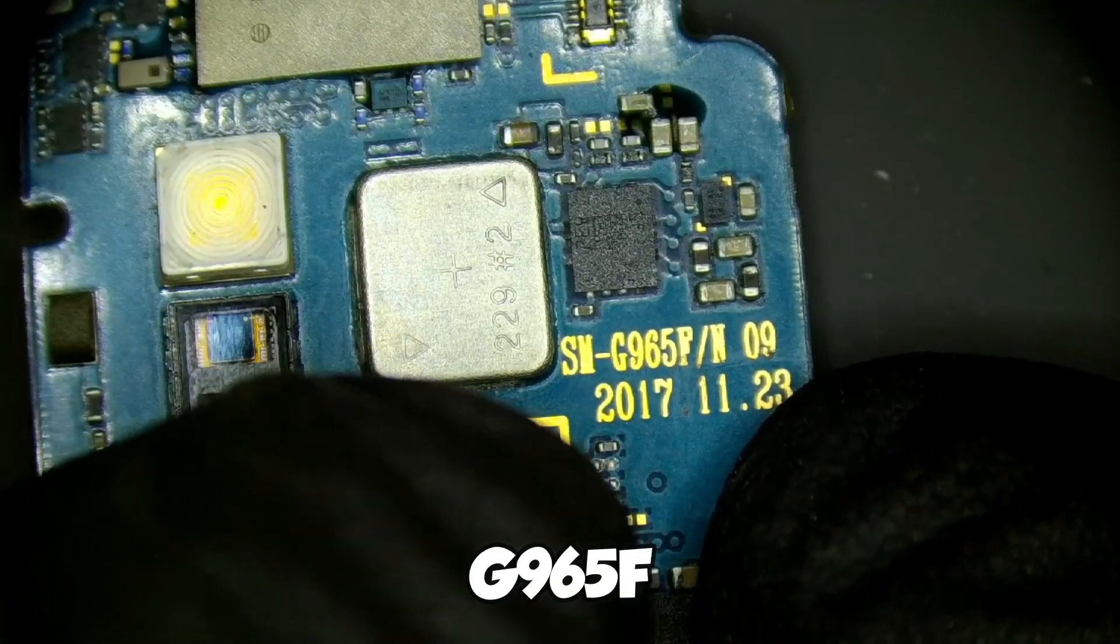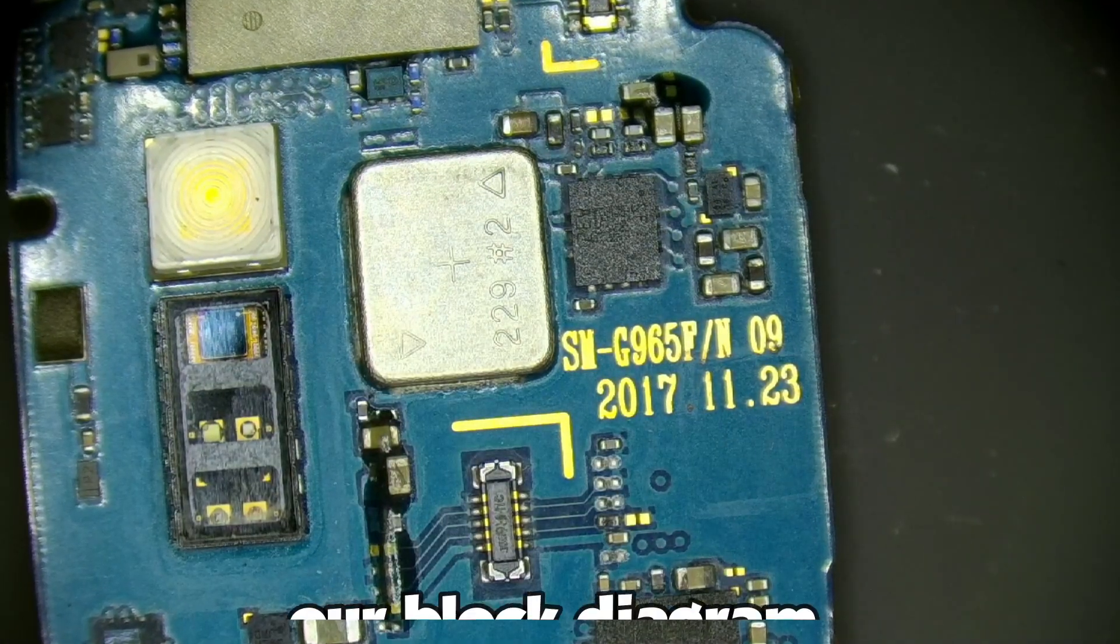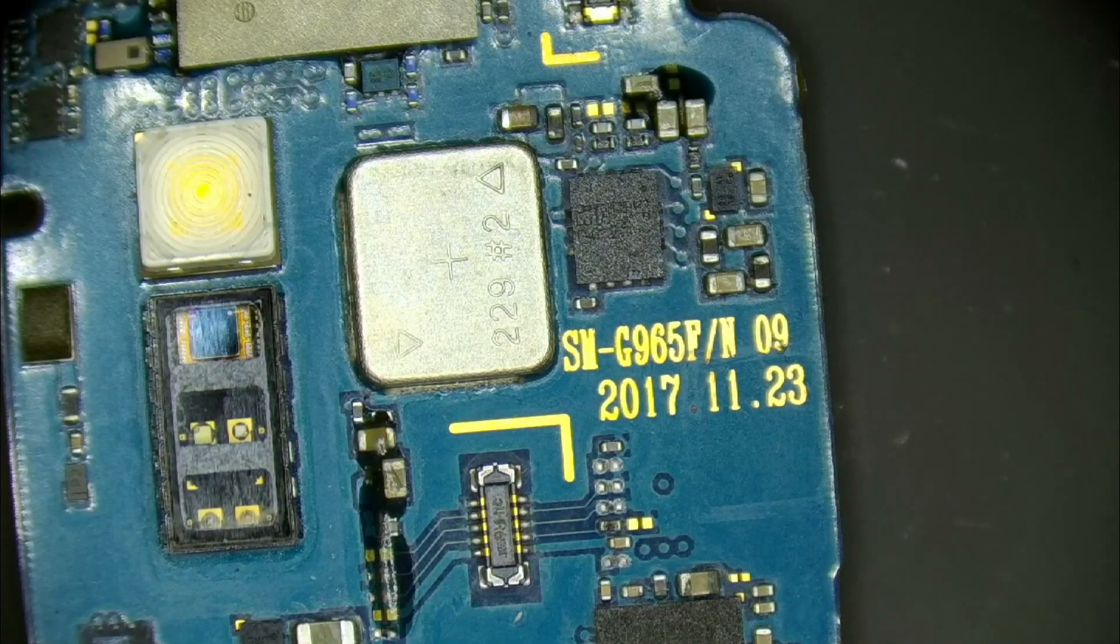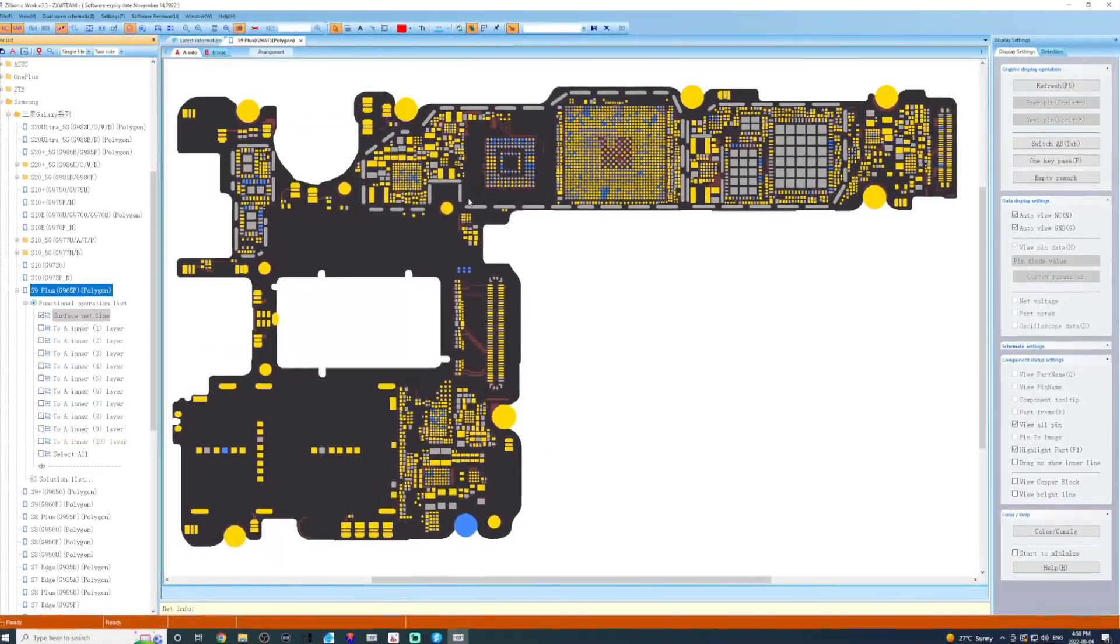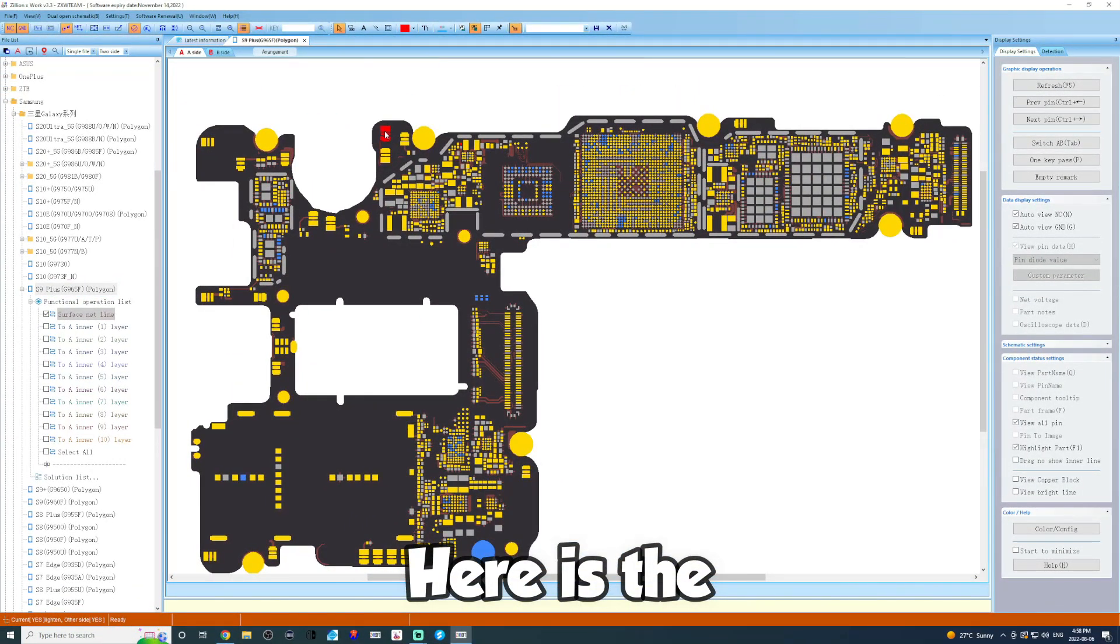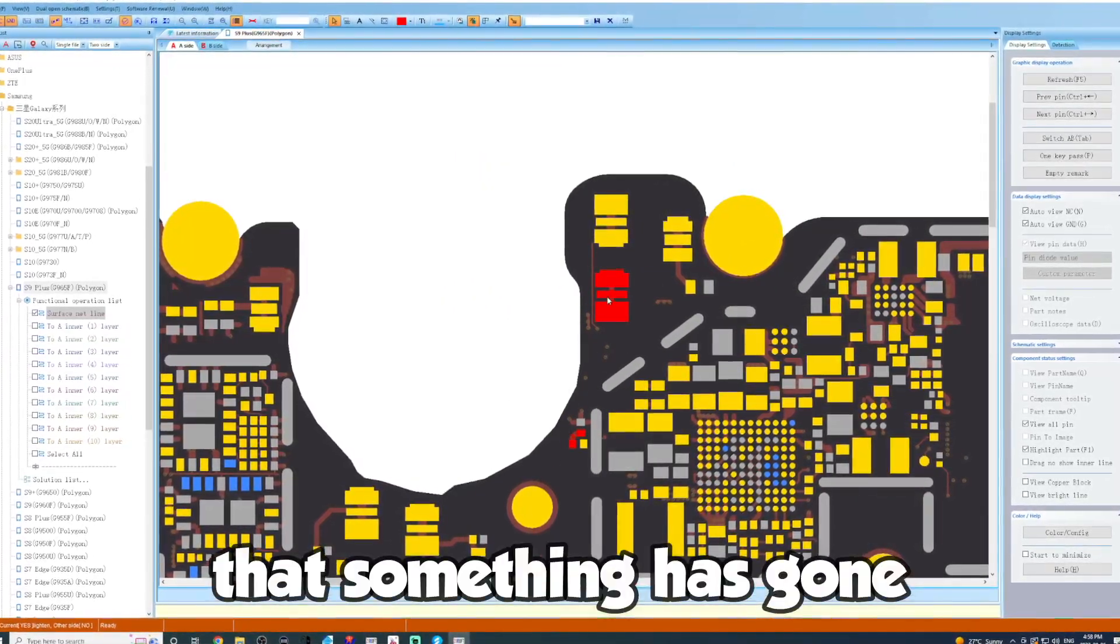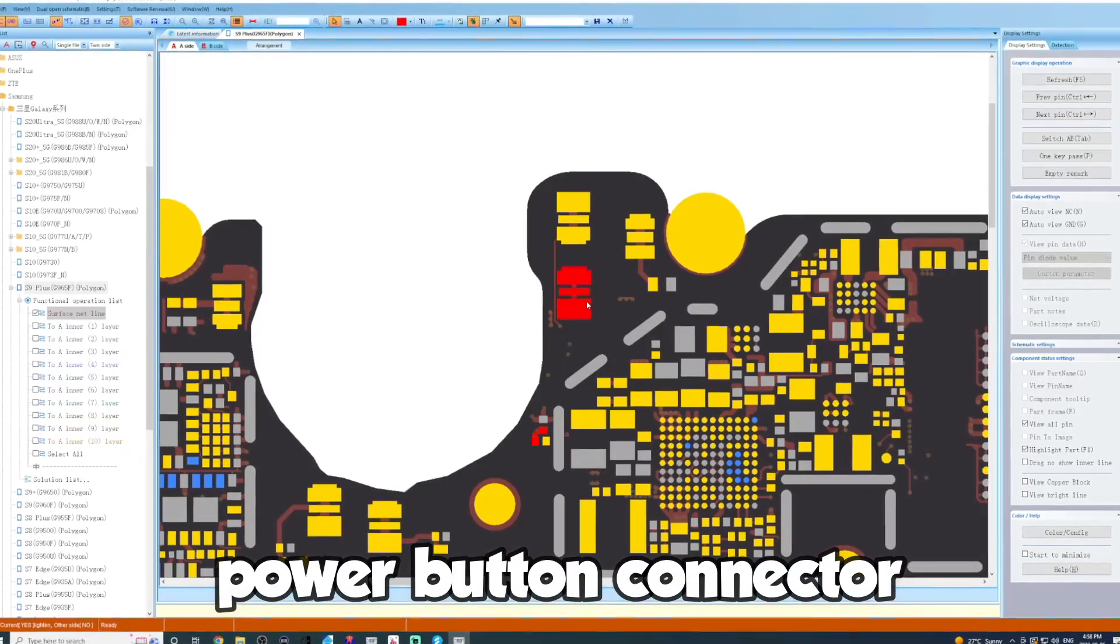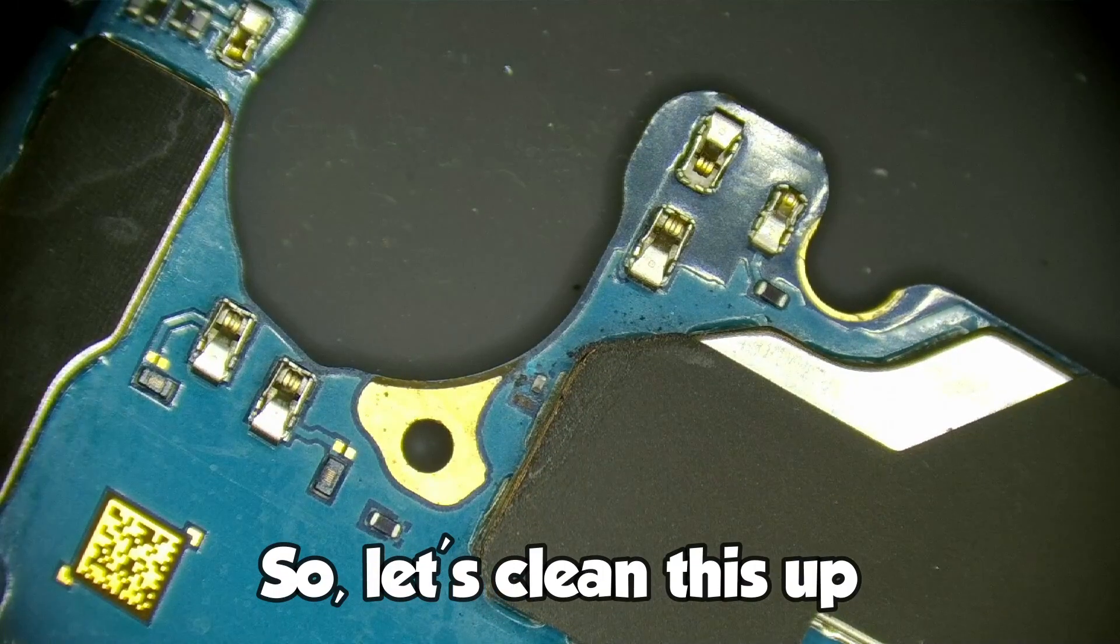This is a G965F. Let's switch to our block diagram. Let's see if we can get a better idea of what's going on here. Here is the connector, so it does appear that something's gone absolutely horribly wrong with the power button connector on this board. Yeah, so let's clean this up.